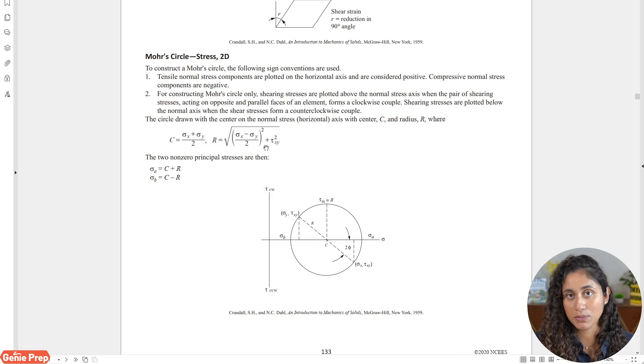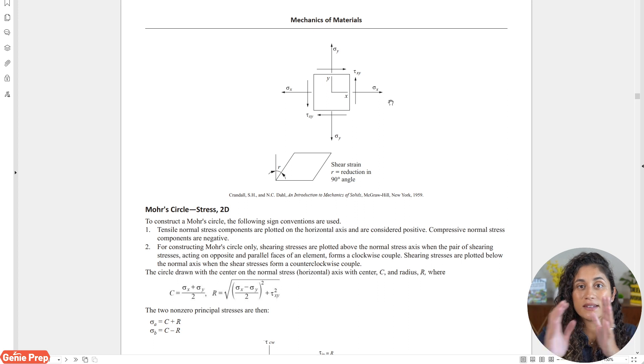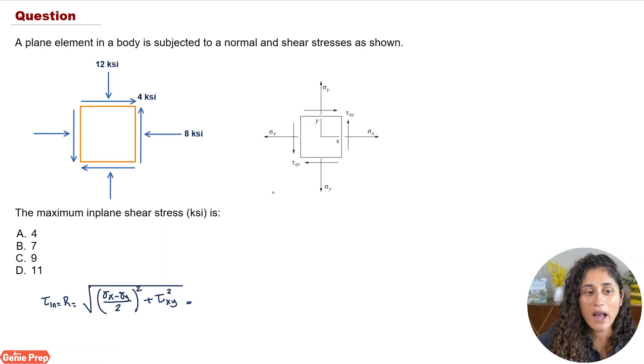Now the radius equation is provided to you here. Okay, so it's in the previous page, and so this is the equation that we're going to use to find the maximum in-plane shear stress. Now the next thing we're going to do is we're going to take a look at this 2D stress element that is provided to us here, and then we're going to compare it to the one that we have in the problem.